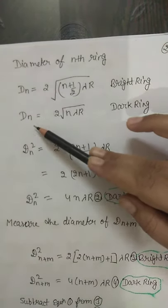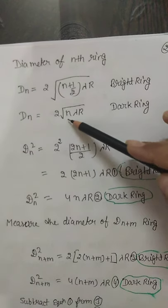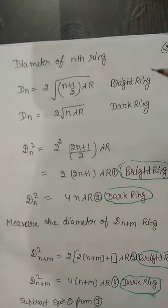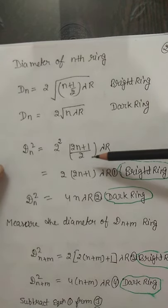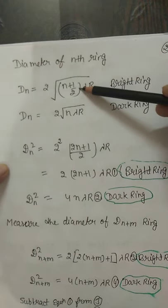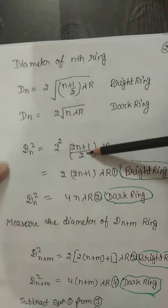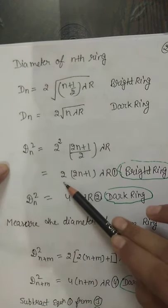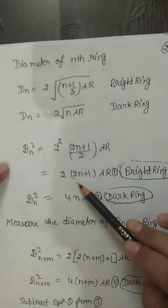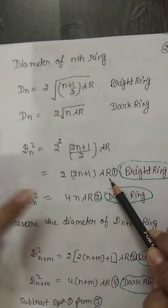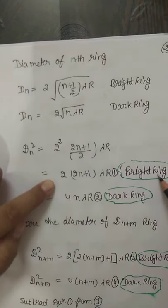The diameter of the dark ring is D_n = 2 × sqrt(n × lambda × R). Squaring this, D_n squared for the bright ring equals 2(2n + 1) × lambda × R. This will be the first equation for the bright ring.